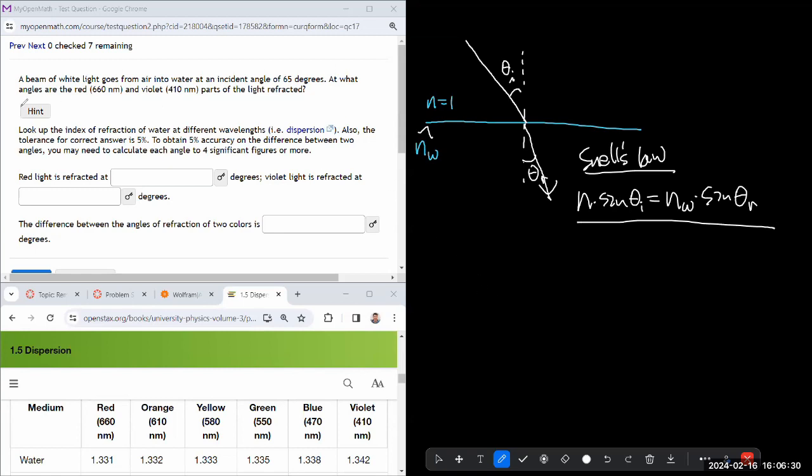Snell's law will say the index of refraction times the sine of the angle of incidence is equal to index of refraction on the outgoing side times sine of the refracted angle. So it's asking for what angles are these refracted? Okay, so I can solve for the refracted angle. I'm just going to do that algebra in my head.